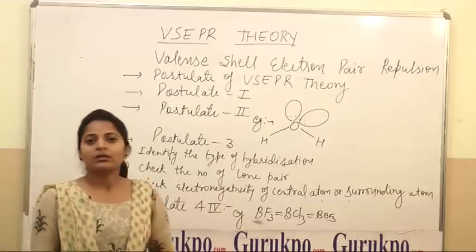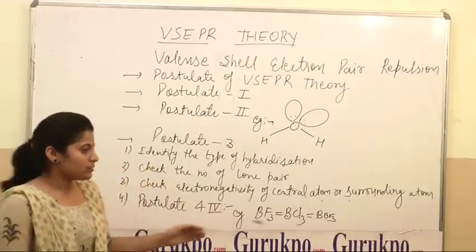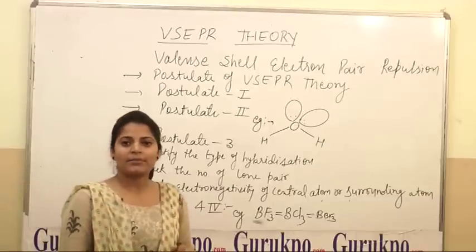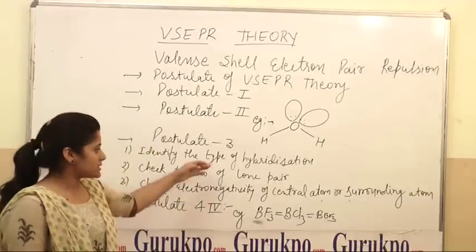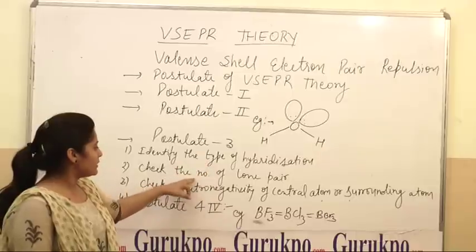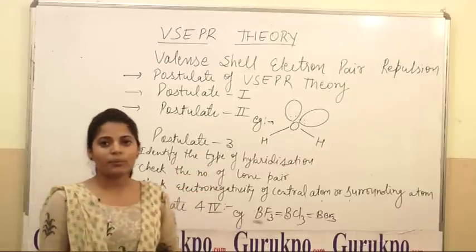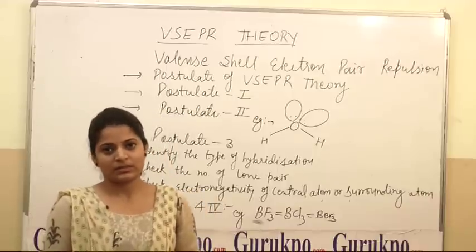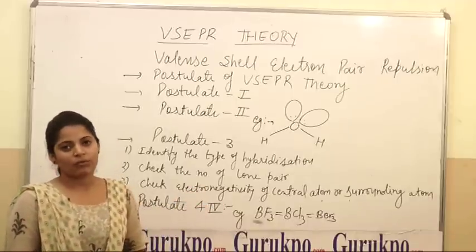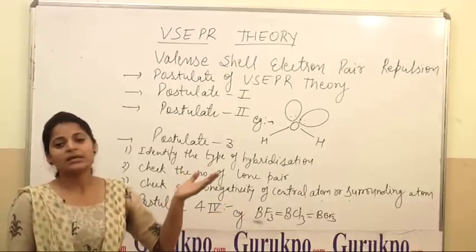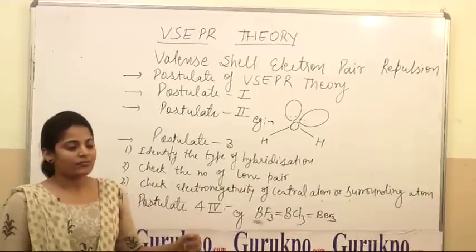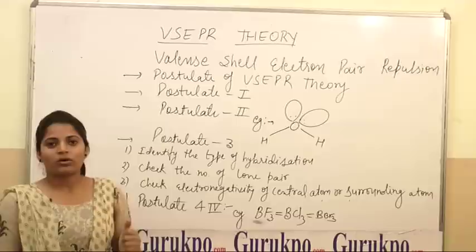Postulate 3 is based on the bond angle. First, we identify the hybridization. If hybridization is the same, and the percentage of S character increases, then the bond angle increases. If hybridization is the same, then we go to the second step: if the number of lone pairs increases, then bond angle decreases. If lone pairs are also the same, then we go to the third step — electronegativity of the central atom and the surrounding atom. If the electronegativity of the central atom increases, then the bond angle of that molecule increases. If the electronegativity of the surrounding atom increases, then bond angle decreases.